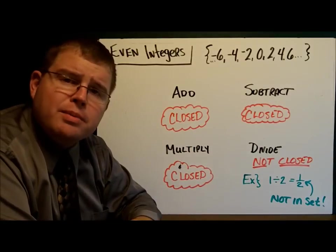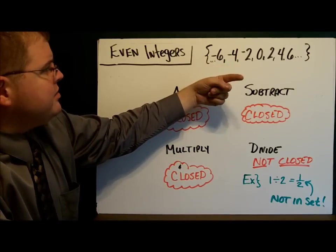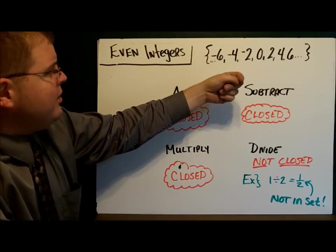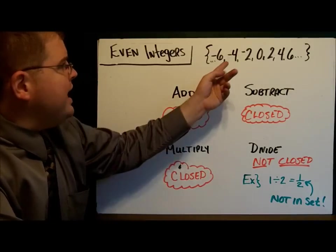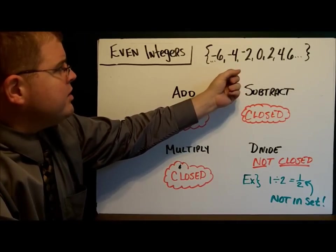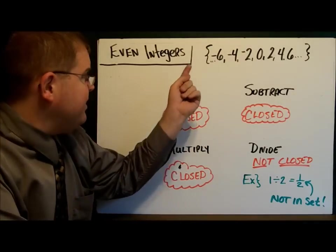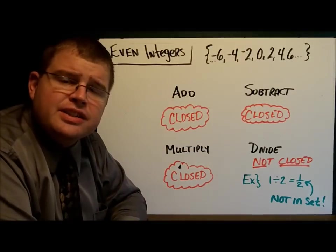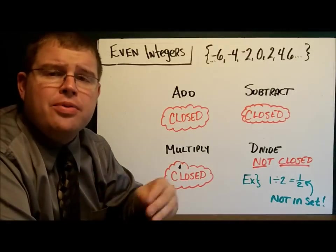How about multiplication? 4 times 2 is 8. 6 times 2 is 12. 2 times 0, 0. Negative 4 times negative 2 is 8. Negative 4 times positive 4, negative 16. They're all even integers. It looks like it's closed under multiplication. I've won 3 times now.